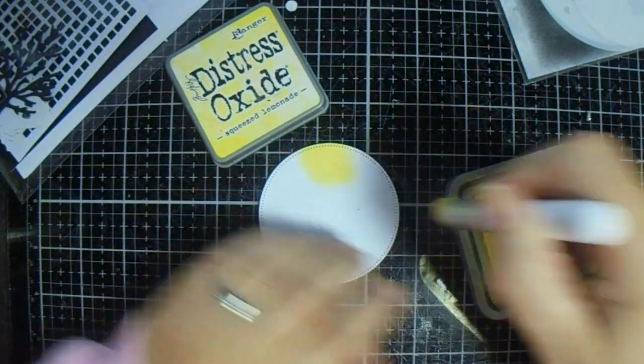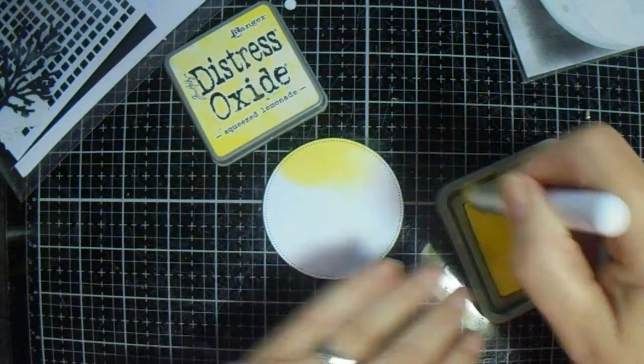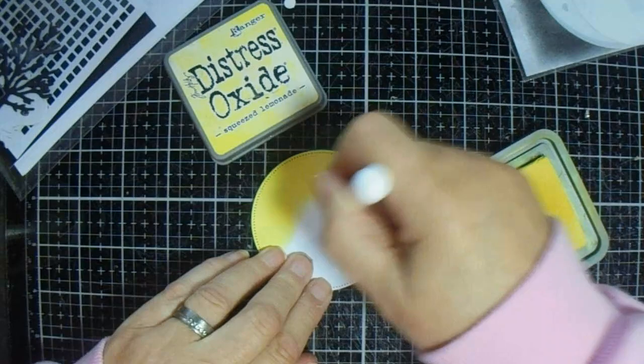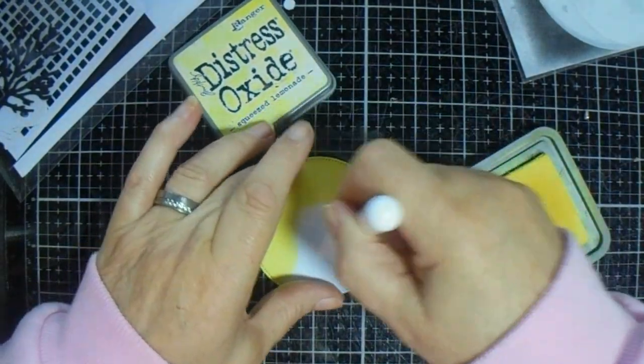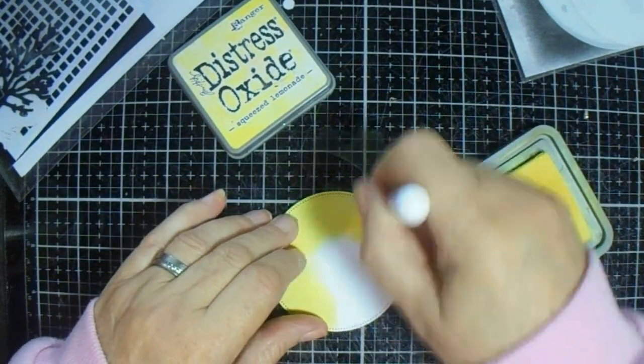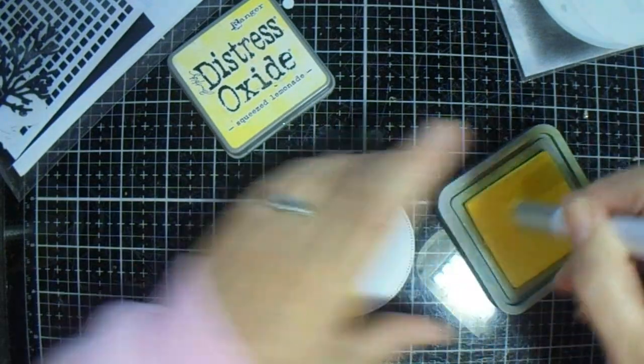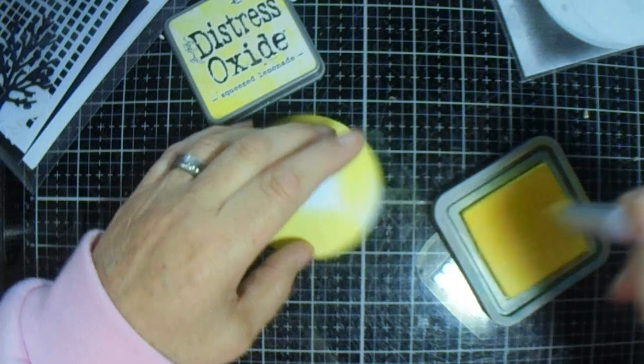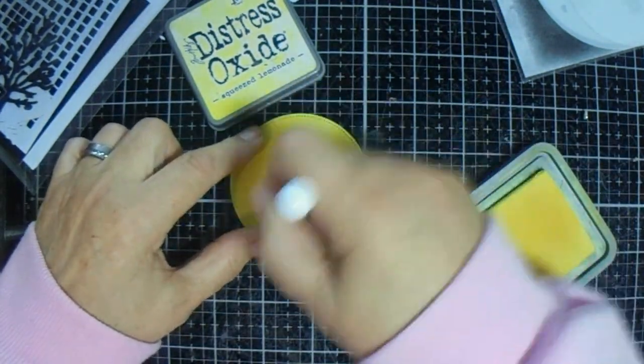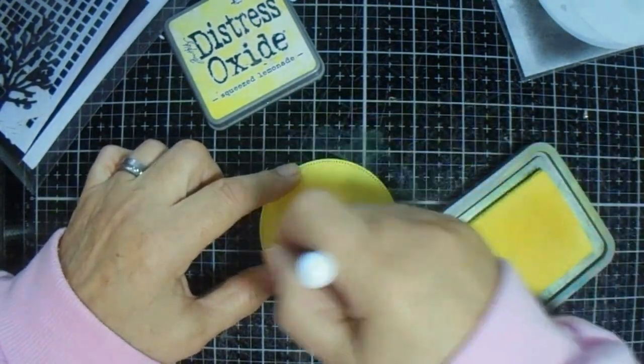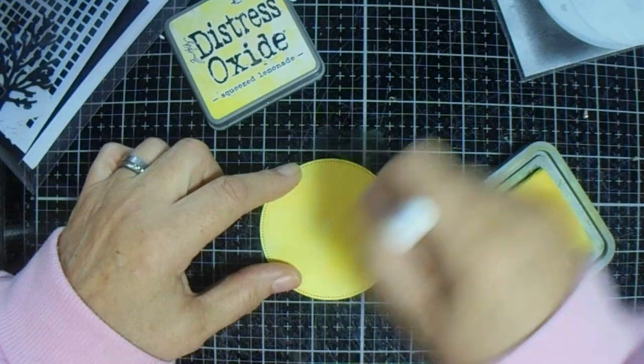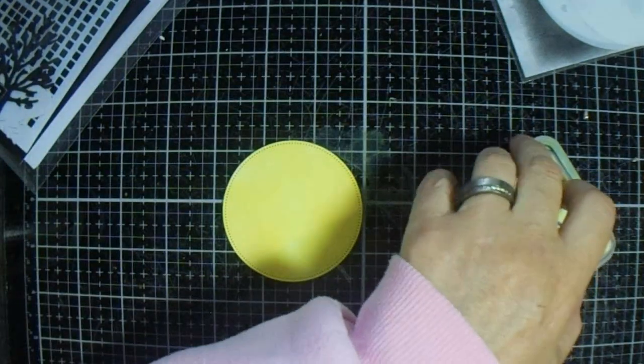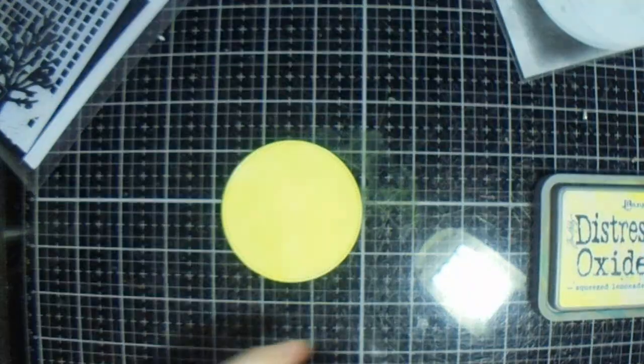I've just cut out a circle with a stitched circle die, and I am coating it with squeezed lemonade. I'm going to be using Tim Holtz Mini Masks. That's the basic coat down, quick and easy breezy.